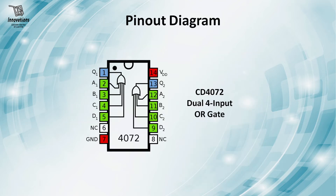Today I will show you CD4072, which is a four input OR gate. Here is the schematic of the IC. You can see there are two four input OR gates. Pin number one is the output for OR gate one and pin numbers two, three, four, five are the inputs. For OR gate two, pin numbers nine, ten, eleven, twelve are inputs and pin number thirteen is the output. Pin number fourteen is connected to positive power supply and pin number seven is connected to negative power supply or ground. Pin numbers six and eight are no connection pins.